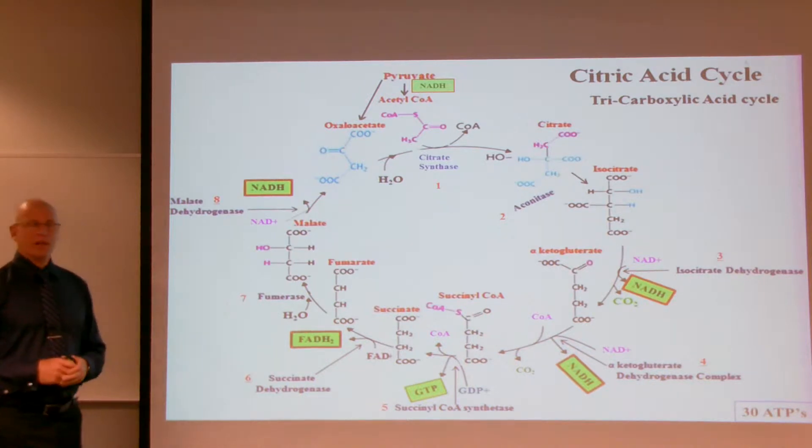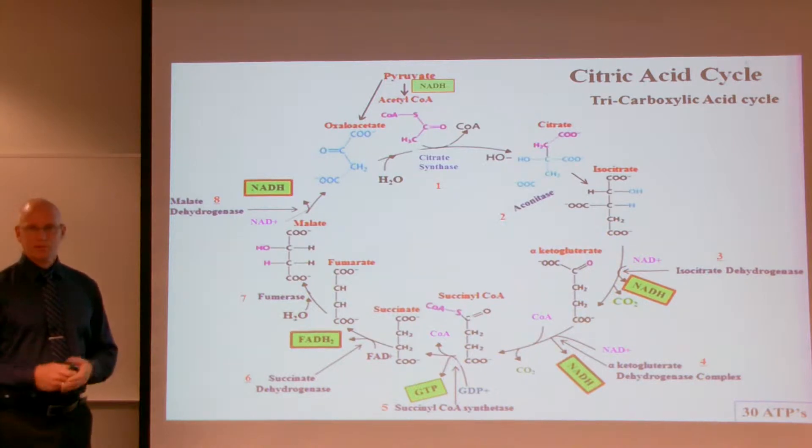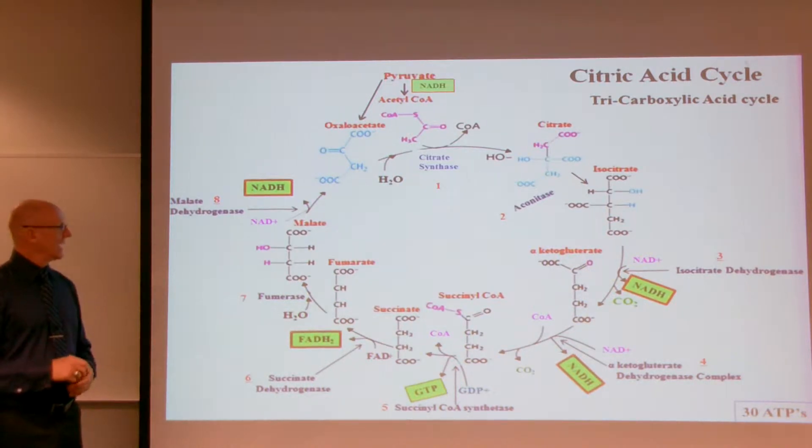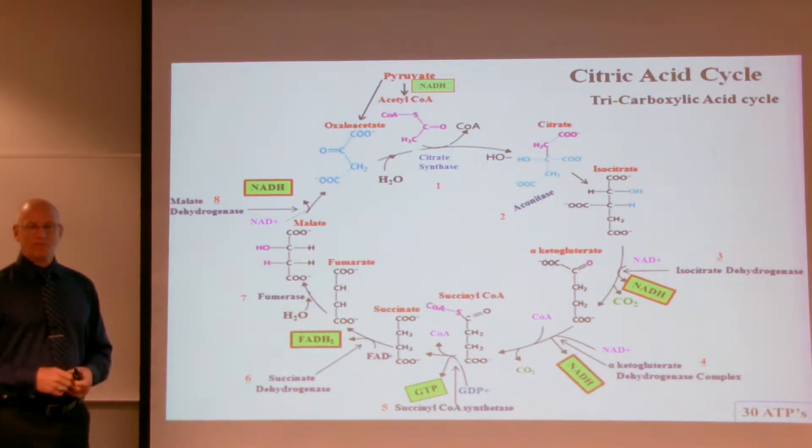It's a 10-step process, and we identify those steps through the enzymes that help facilitate that reaction. I've eliminated two of the steps, so I'm going to go through eight steps. If you remember, pyruvate is the ending product of glycolysis. Pyruvate will enter the mitochondria and be converted to acetyl-CoA.